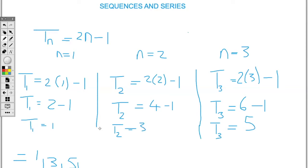If we wanted the first five terms, we would need to find n equal to four and n equal to five as well. We will never start at zero or a negative number — we don't have a term called a zero term, so we can't say n equals zero. We always start at one when finding the terms.